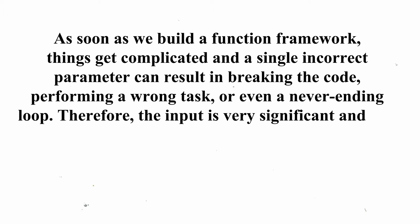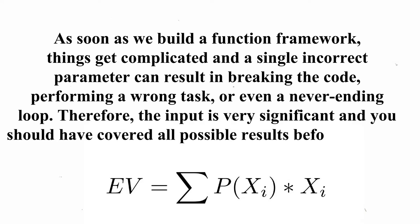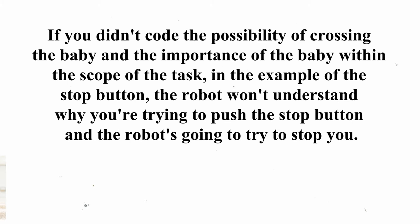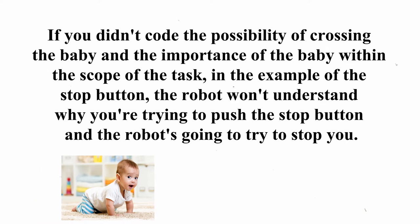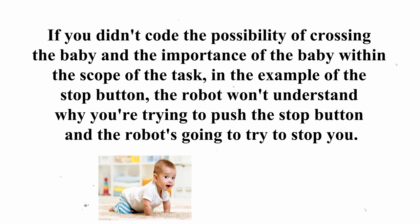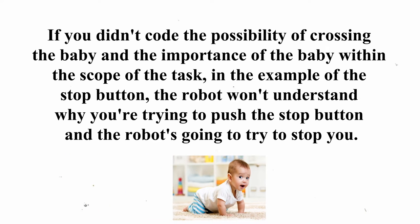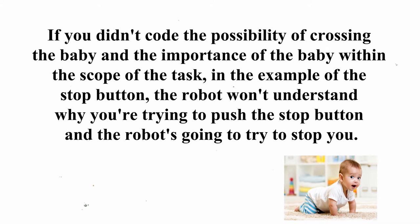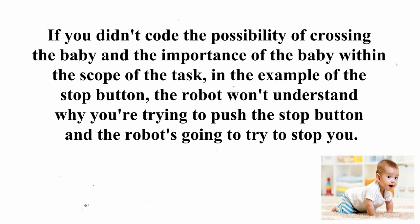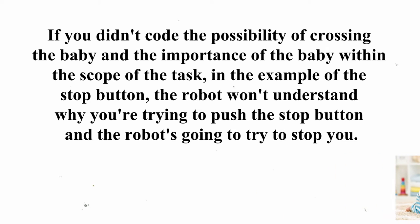Therefore, the input is very significant and you should have covered all possible results before executing the code. If you didn't code the possibility of crossing the baby and the importance of the baby within the scope of the task — as in the stop button example — the robot won't understand why you are trying to push the stop button, and the robot is going to try to stop you.